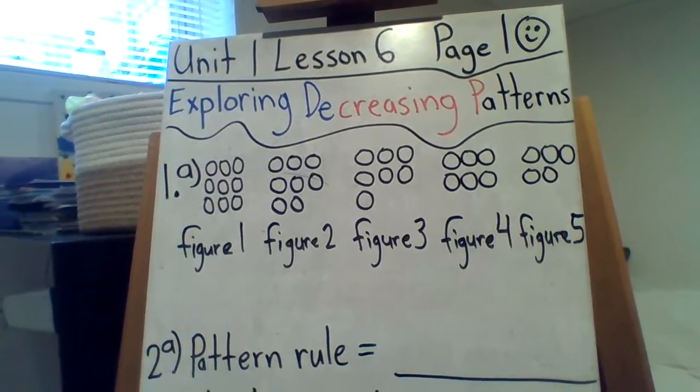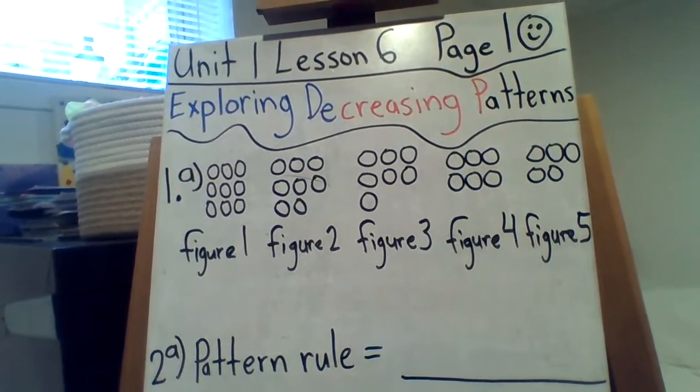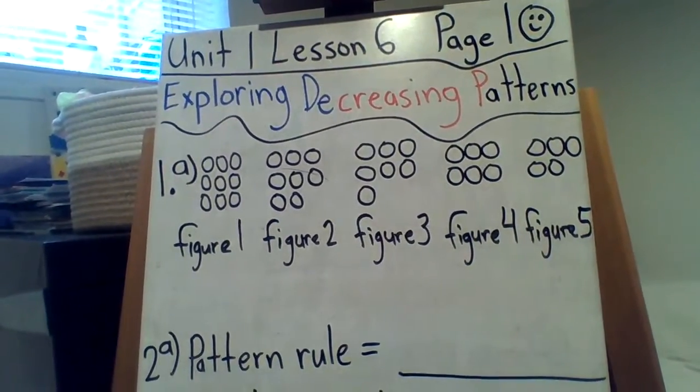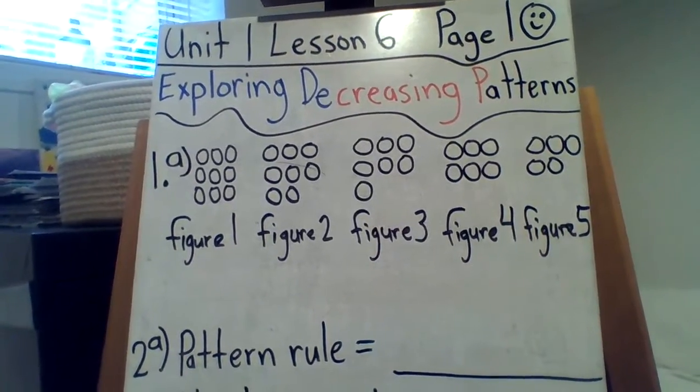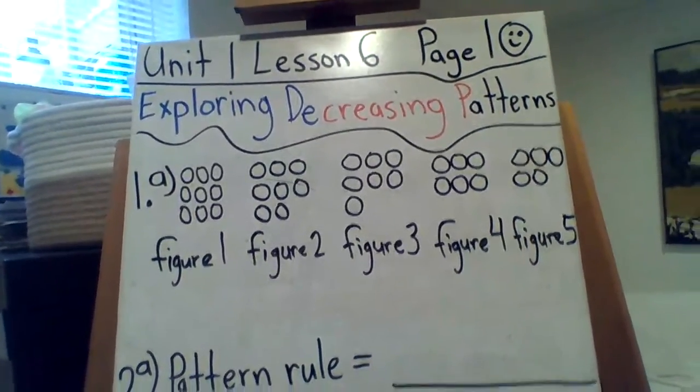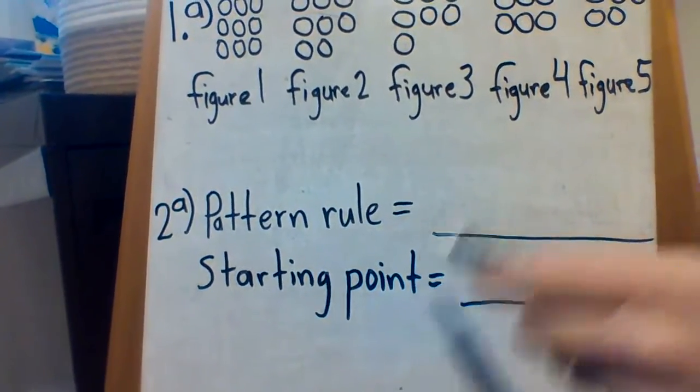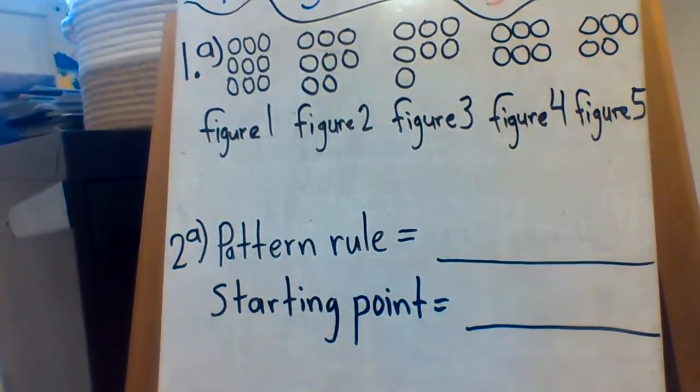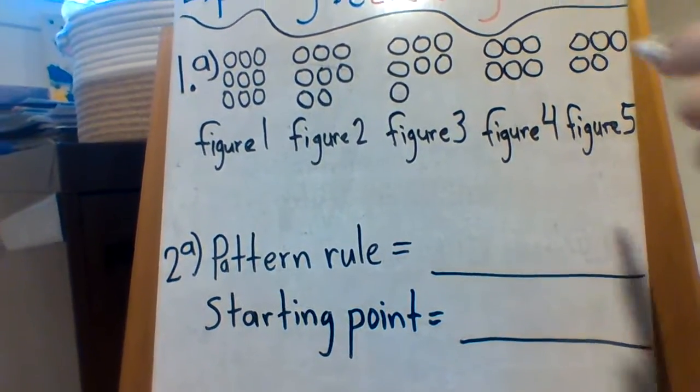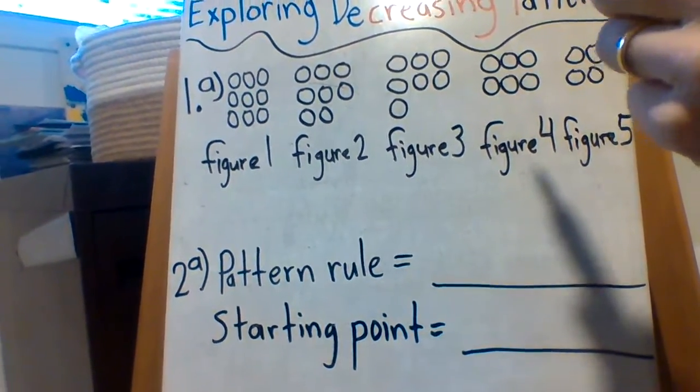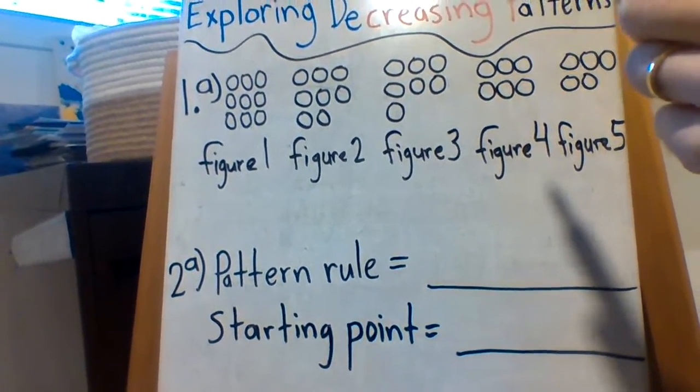Just kind of showed you the quick review. And now let's check out 1A. It says draw the next two figures in each decreasing pattern. So again, the two most important things: the pattern rule and the starting point, right? Same as with the increasing patterns. So I know they don't even ask you to do this, but it will help.